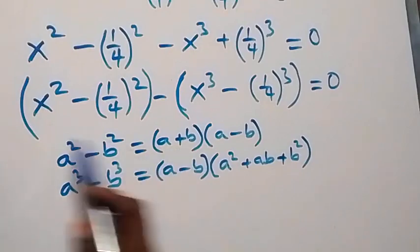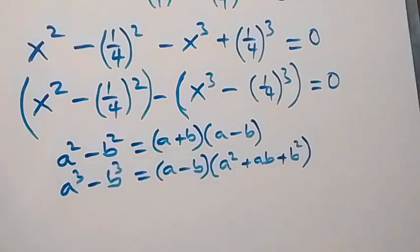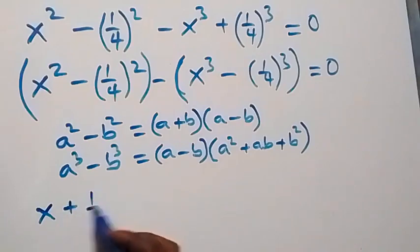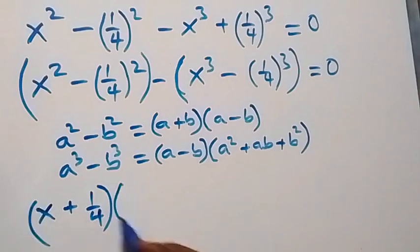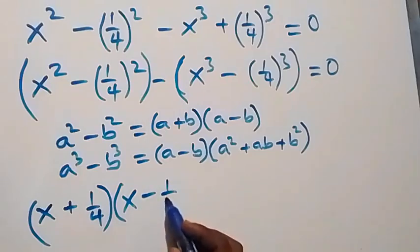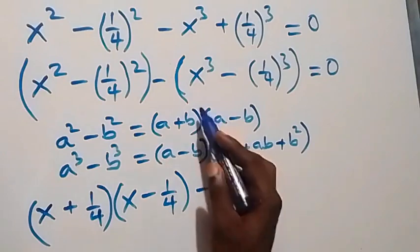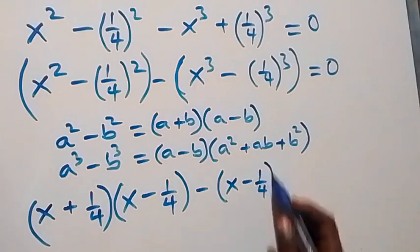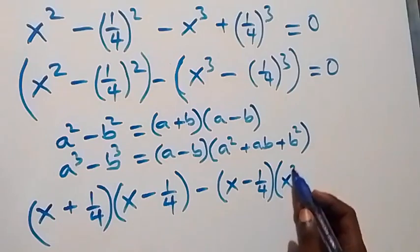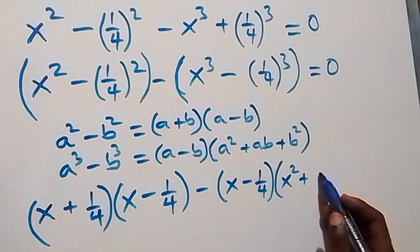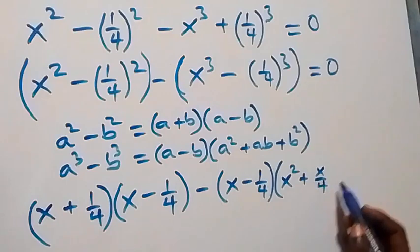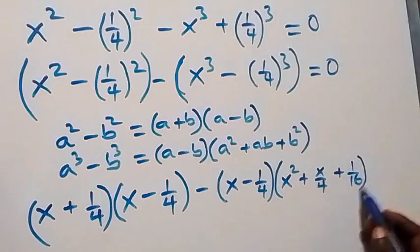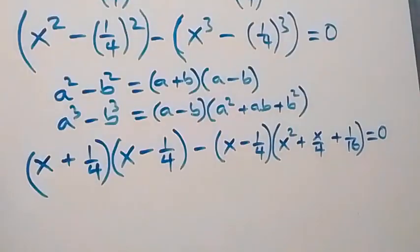Applying these identities where a equals x and b equals 1 over 4, the squared part becomes (x plus 1 over 4)(x minus 1 over 4), and the cubed part becomes (x minus 1 over 4)(x squared plus x over 4 plus 1 over 16), and the whole expression equals zero.